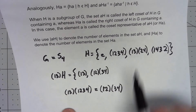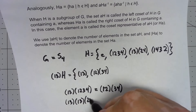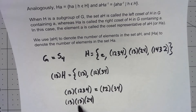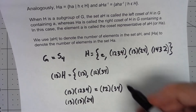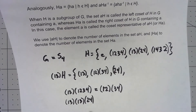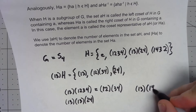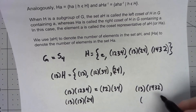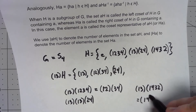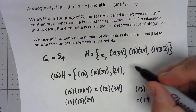Taking (1 3) times (1 3 2 4): notice that (1 3) is its own inverse, so those cancel each other out and we're left with (2 4). For (1 3) times (1 4 3 2): one goes to four, four goes to three which goes to one; two goes to one which goes to three; three goes to two — so we get (1 4 2 3).